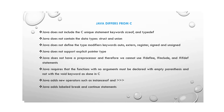Fourth, Java does not support explicit pointer types, but C programming supports explicit pointer types. Fifth, Java does not have preprocessor statements like #define, #include, or #ifdef, whereas C uses such preprocessor statements. Instead of preprocessor statements, Java uses import statements.